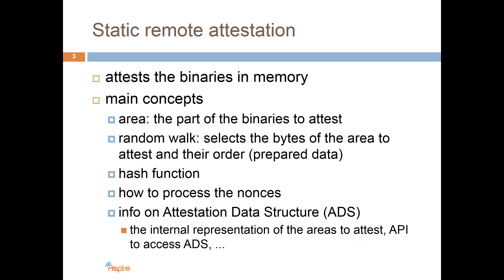Static remote attestation attests the integrity of the application binaries in memory. The parts to monitor are named areas. A random walk is performed on the area to attest, to compute the prepared data, which are then hashed with an algorithm of choice. It is also possible to specify how to parse the nonces sent in the attestation request, and how to store area information. Information about the areas that can be attested by an attestator are stored in the ADS, the attestation data structure.